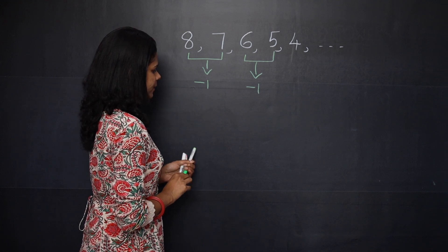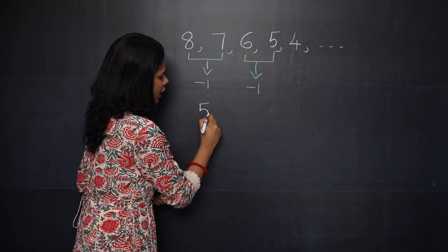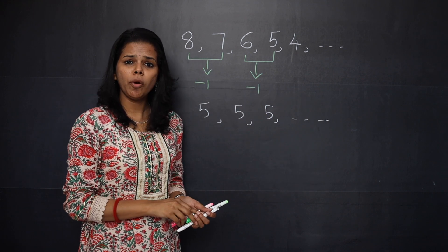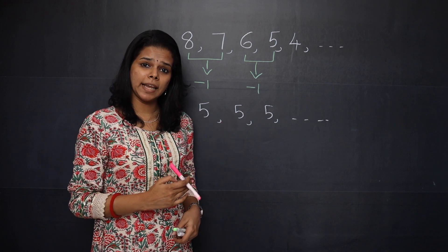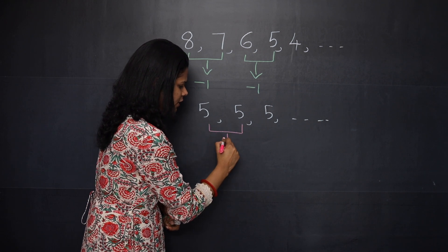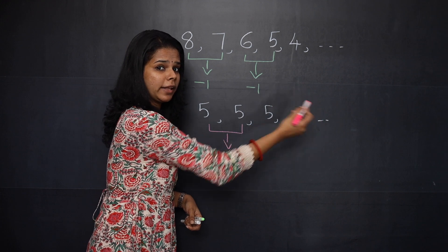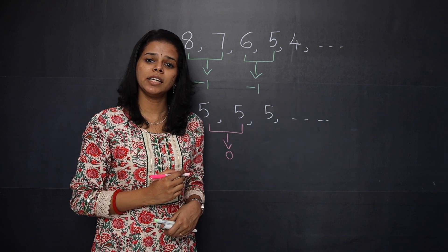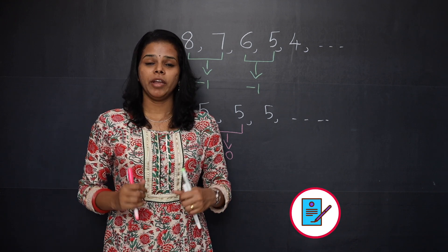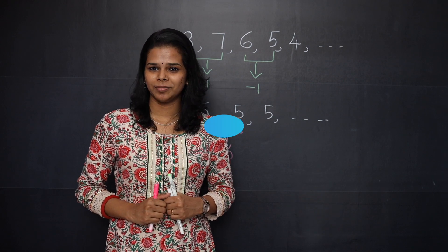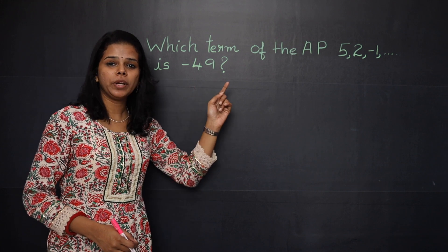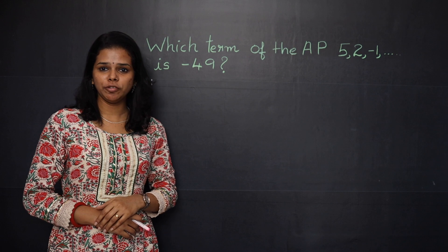Now be ready with your pen and paper. We are going to solve some important questions. Let's move on to our first question: Which term of the AP 5, 2, −1, etc. is −49?